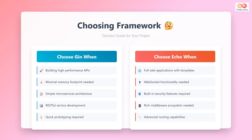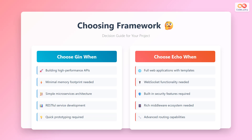Choosing between JIN and ECHO depends largely on your project requirements and development goals. JIN is the ideal choice when you're building high-performance APIs where every millisecond and megabyte counts. Its minimal memory footprint makes it perfect for microservices architectures where you might be running multiple service instances. If you're developing simple RESTful services or need to create quick prototypes, JIN's straightforward approach and minimal setup requirements make it an excellent choice. The framework's simplicity also means faster learning curves for new team members.